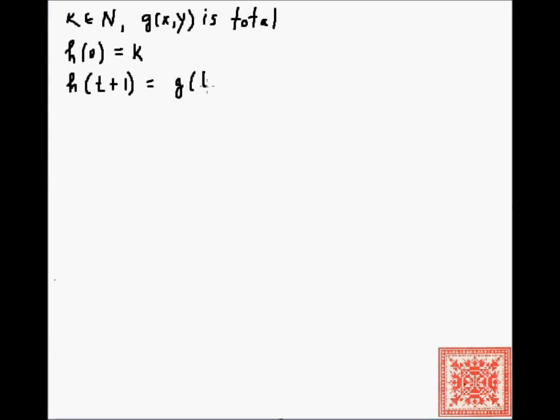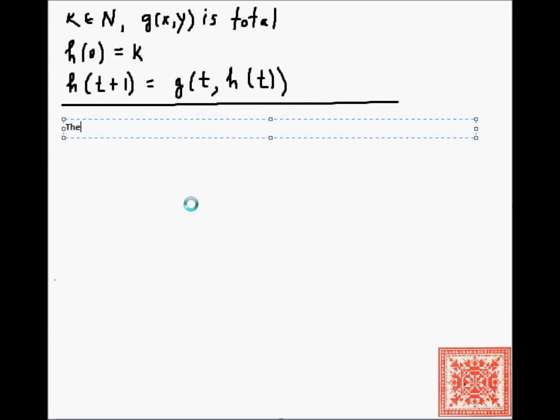You can review the previous screencast on the topic of composition and recursion, where we played with a couple of examples and expanded h for various values. So h is obtained from g by primitive recursion. Let's prove a theorem, a very nice theorem.